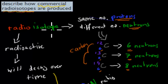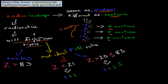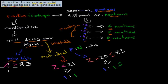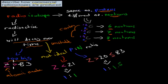A radioactive isotope is an isotope with a different number of neutrons that will decay over time because it's unstable. Any radioisotope is unstable and will decay, and there are a couple of reasons why. First, if it's too big — meaning it has an atomic number (Z) greater than 83 — it's always going to be unstable and will decay over time.